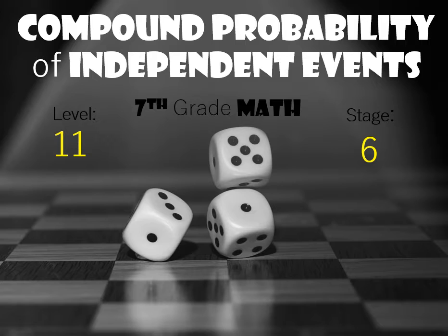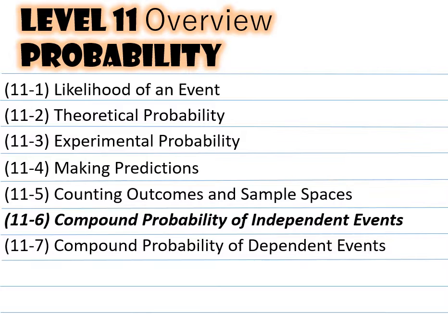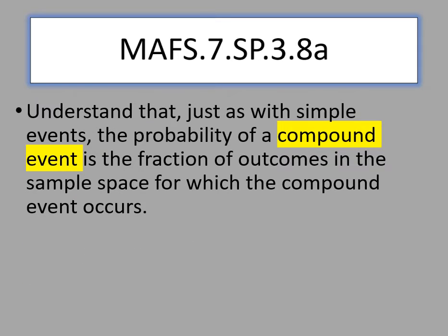This is level 11, stage 6, 7th grade math. Our level 11 overview for probability — we are now on stage 6, which means we are almost done with this level. The state standard says we're going to understand that, just as with simple events, the probability of compound events is the fraction of outcomes in the sample space for which the compound event occurs.